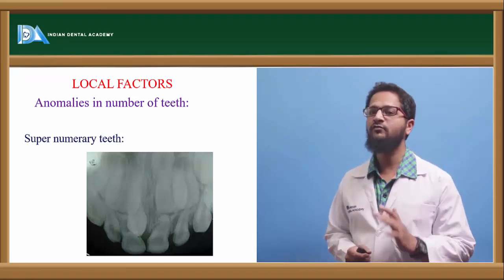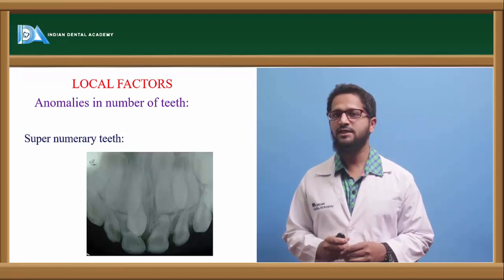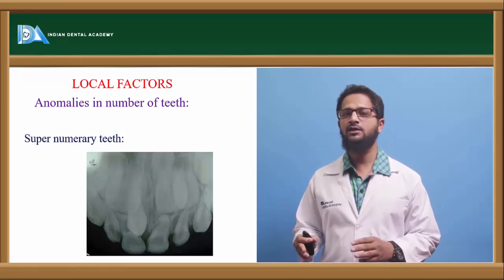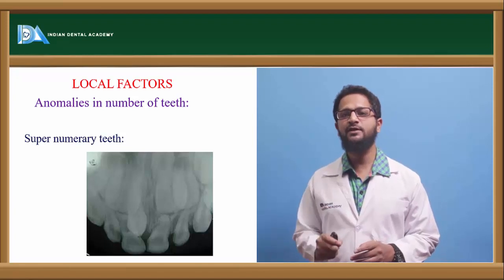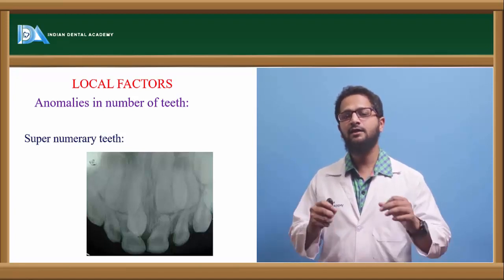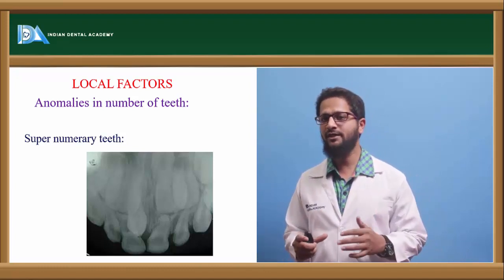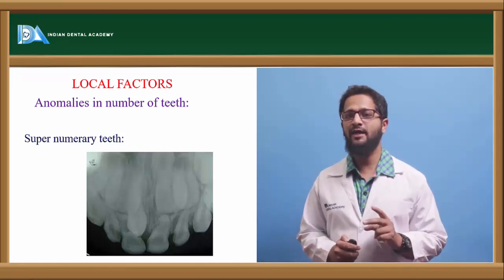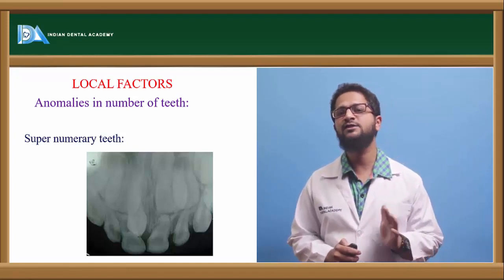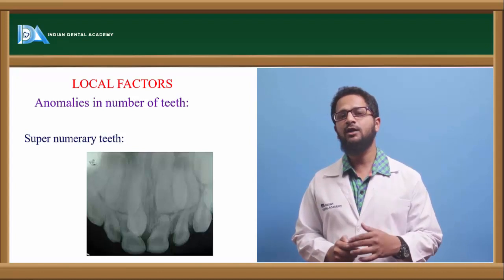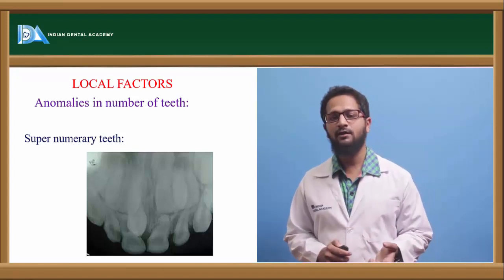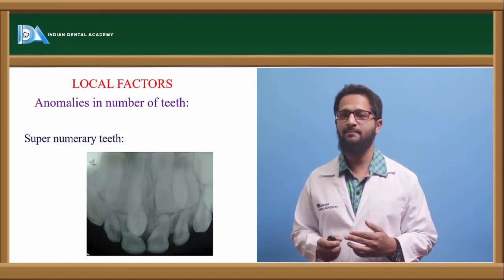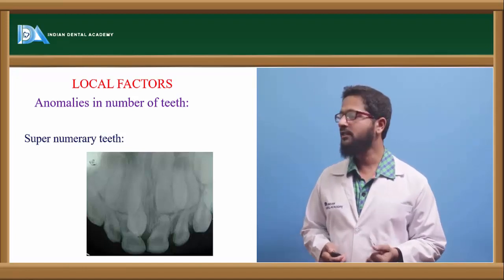Now for local etiological factors of malocclusion. First, anomalies in the number of teeth. Supernumerary teeth are any teeth in excess of the normal number. In 75% of cases they are identified accidentally on an IOPA or OPG, as most remain unnoticed and impacted. Most commonly they are seen between the two central incisors, called mesiodens, though they can also appear in the premolar and molar areas, or distal to molars as distomolars. Impacted supernumerary teeth interfere with orthodontic movement, and if they erupt, they cause crowding.